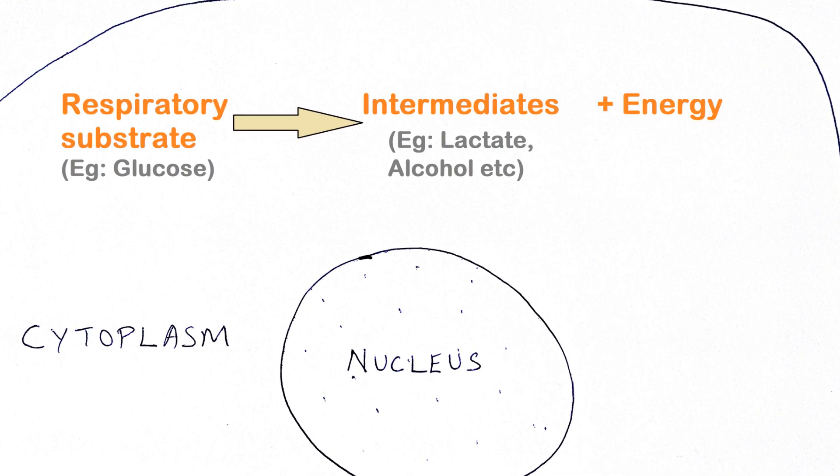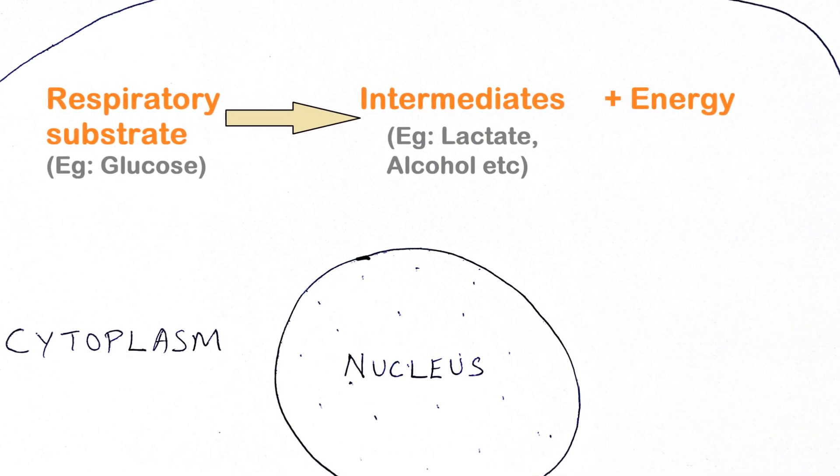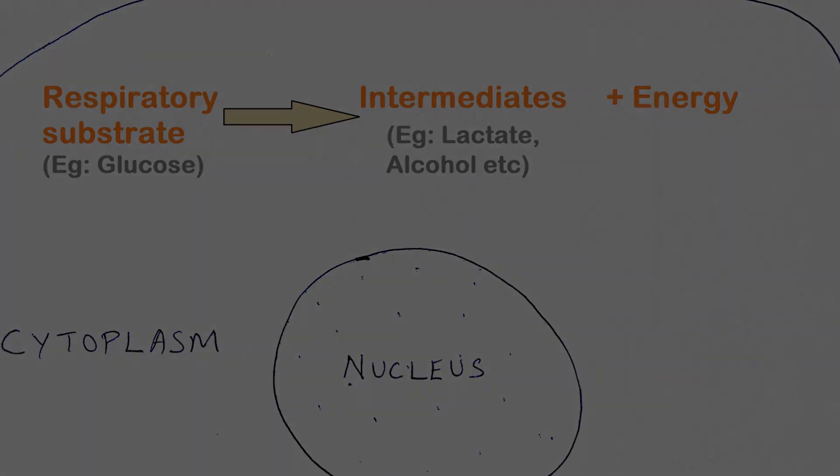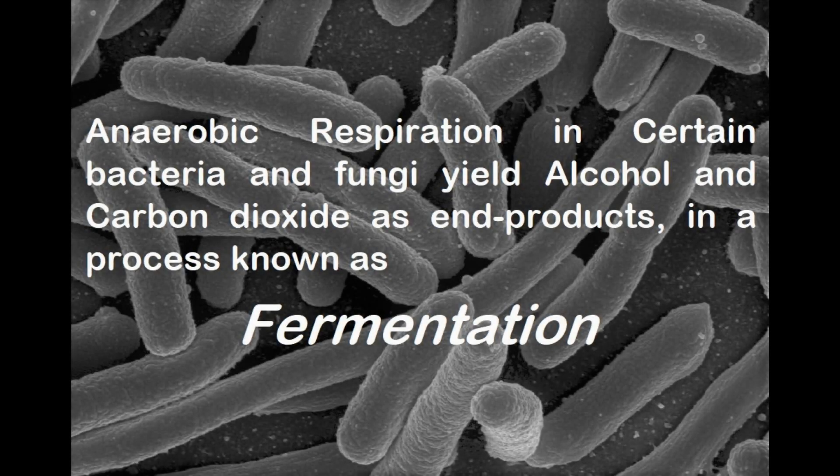Anaerobic respiration results in the production of intermediate compounds such as lactic acid or alcohol. Certain bacteria and fungi derive all or most of their energy from anaerobic respiration and the end products are frequently alcohol and carbon dioxide. The process in this case is called fermentation.